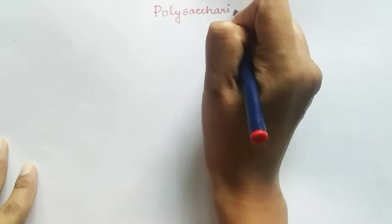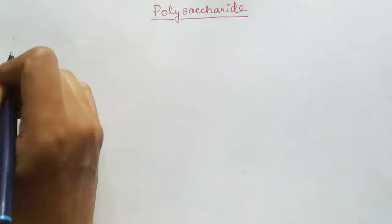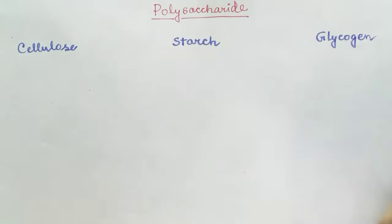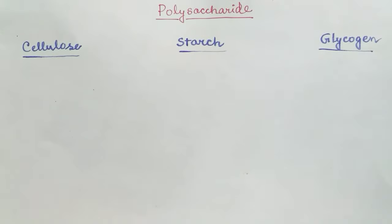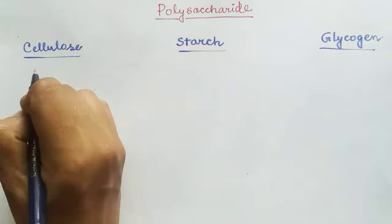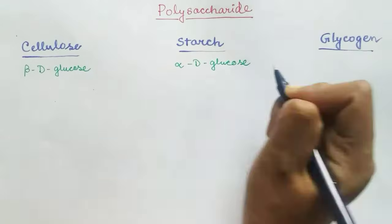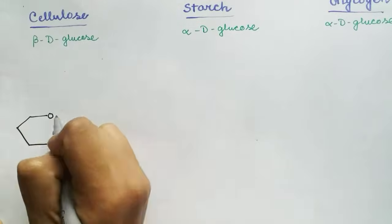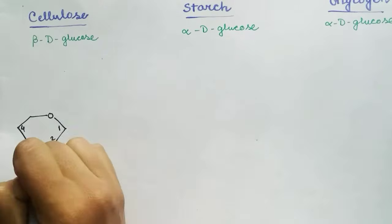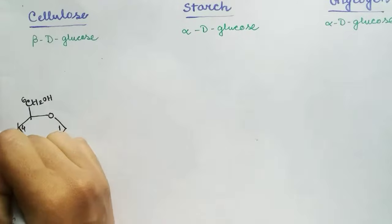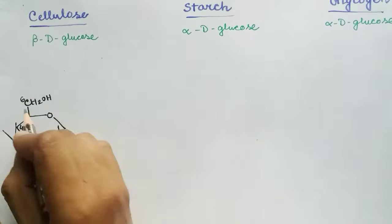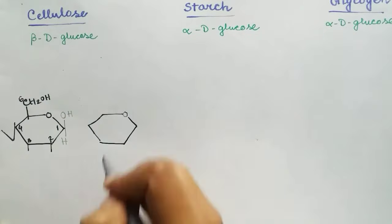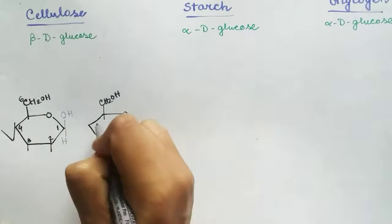Now let us talk about polysaccharides. Polysaccharides are made up of many monosaccharides linked by glycosidic bonds. The three main polysaccharides found in our food are cellulose, starch, and glycogen. Cellulose is a homopolysaccharide of beta D glucose, starch is made up of alpha D glucose, and glycogen is also a polysaccharide of alpha D glucose. In the case of cellulose, the polymer is made up of many beta D glucose monomers.